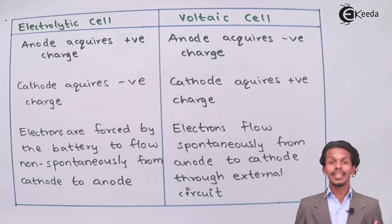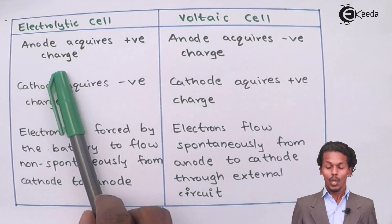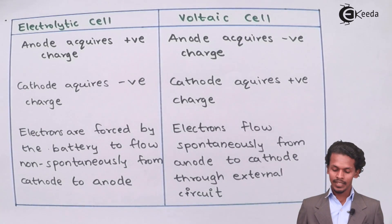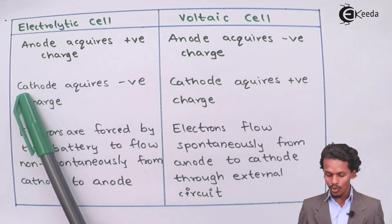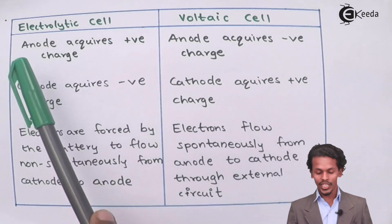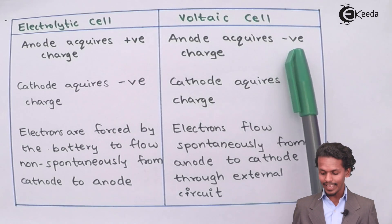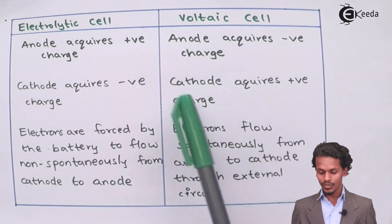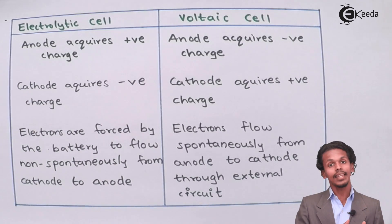Now talking about the electrodes: in the electrolytic cell, the anode acquires a positive charge and the cathode acquires a negative charge. In the voltaic cell, the anode acquires a negative charge and the cathode acquires a positive charge. These are the differences between the two cells based on the charge on their electrodes.